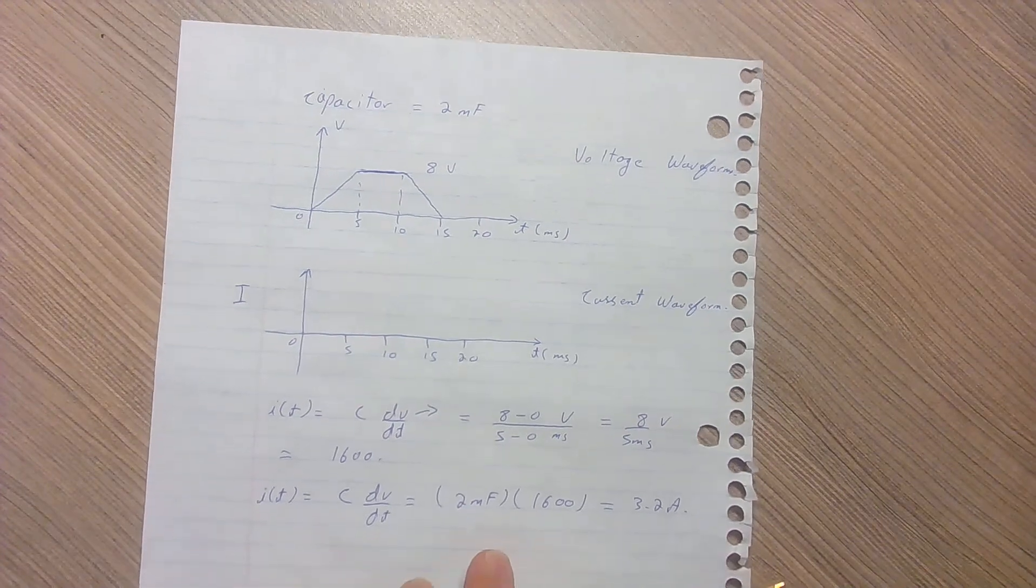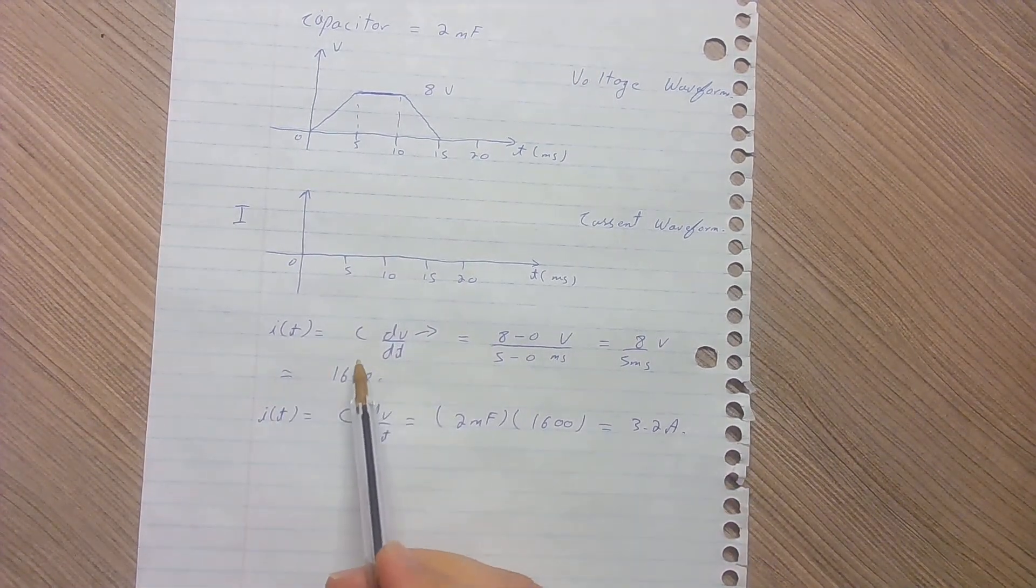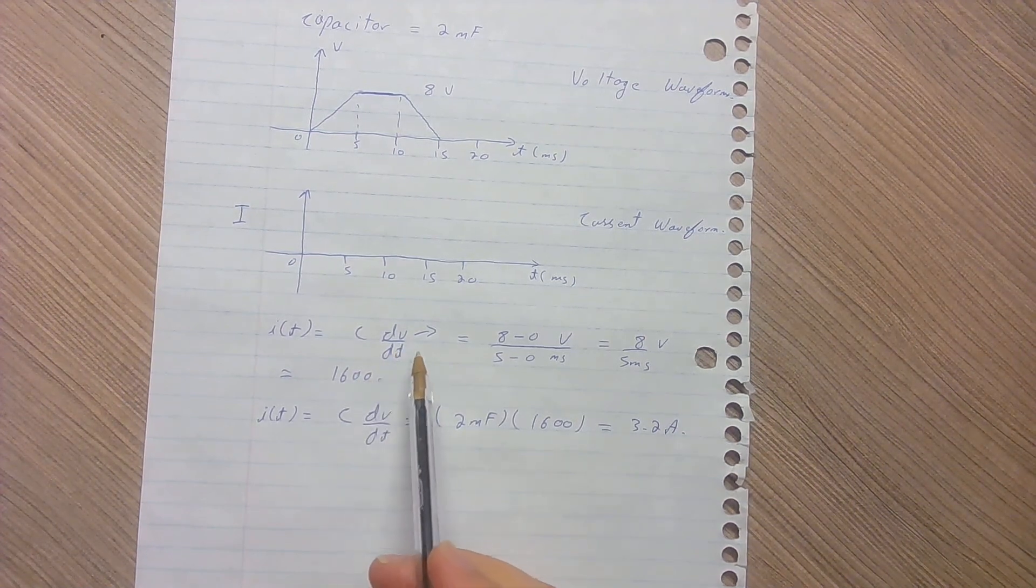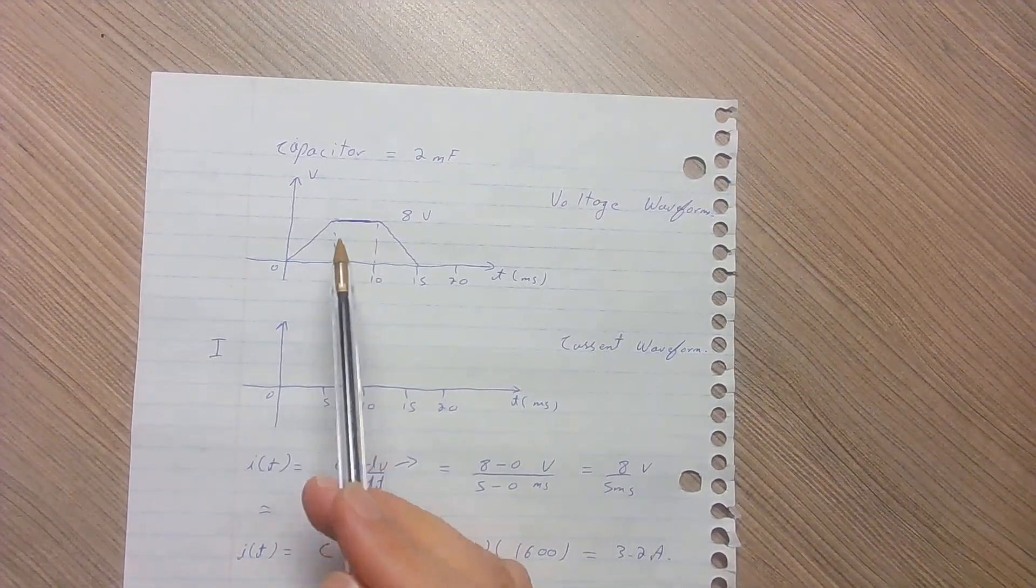First, we need to calculate the magnitude for the current in the time domain, which can be calculated using the formula C times dv/dt. dv/dt is basically the change in voltage, which is from 0 to 8 volts in 5 milliseconds.